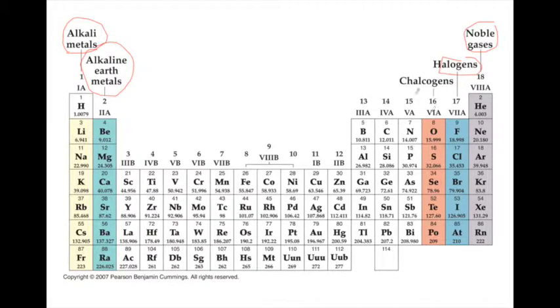And then group 6A, these are called the chalcogens: oxygen, sulfur, selenium. These guys, again, share similar chemical and physical properties. And so sometimes you'll hear those referred to as the chalcogens.